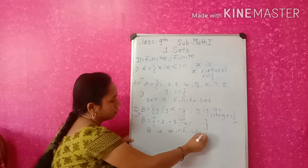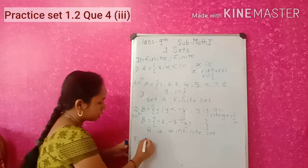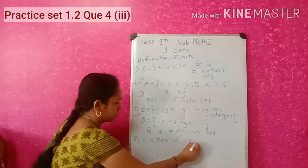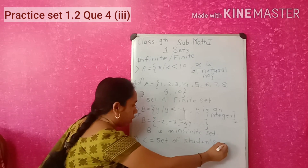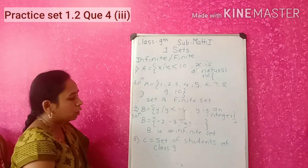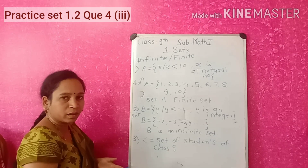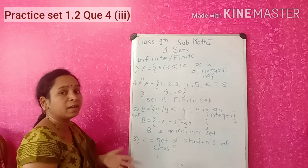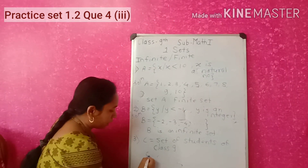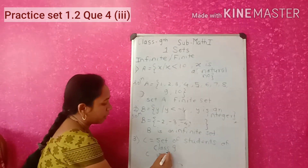Third example: C is the set of students of class 9 from your school. The students are countable and limited, so this is a finite set. We cannot write it in listing method but can directly state: set C is a finite set. You can write the answer directly for this type of example.